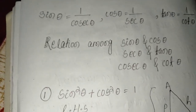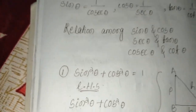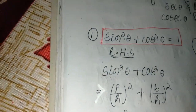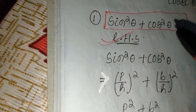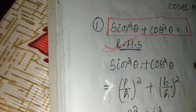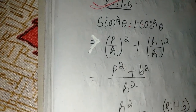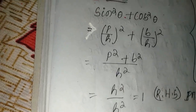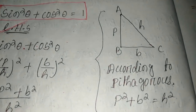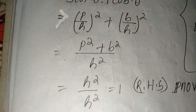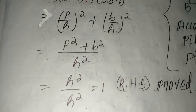The first relation is sin²θ + cos²θ = 1. To prove it, LHS is sin²θ + cos²θ. We know sin theta is P by H and cos theta is B by H. So sin²θ + cos²θ = (P/H)² + (B/H)² = (P² + B²) / H². According to Pythagoras, in a right angle triangle P² + B² = H². Therefore H²/H² = 1. Proved.